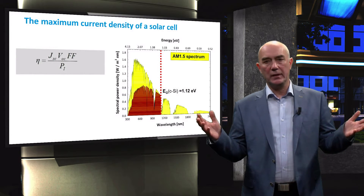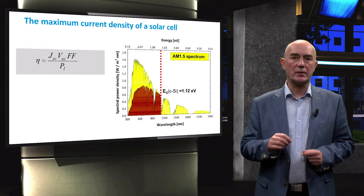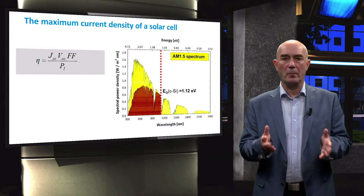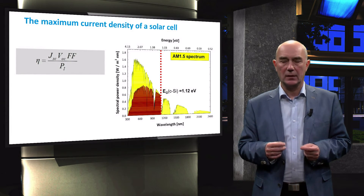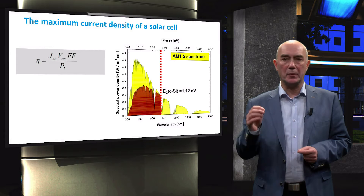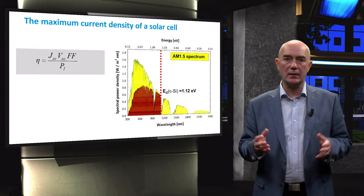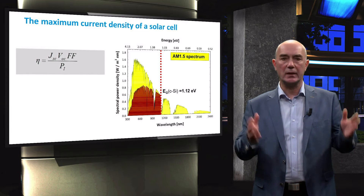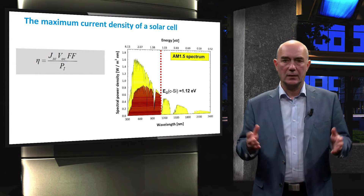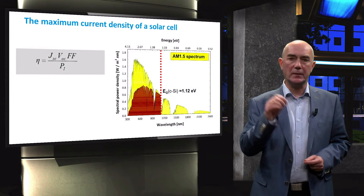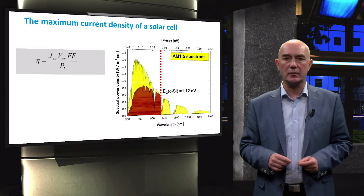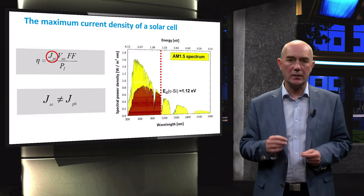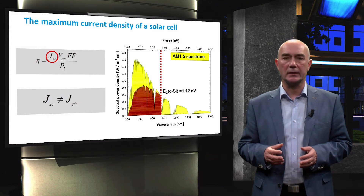We have already learned that the efficiency of a solar cell depends on its short-circuit current density, open-circuit voltage, and fill factor. We also calculated the potential photocurrent density by absorbing the AM1.5 spectrum for a given band gap. Nevertheless, because of the optical and electrical losses in solar cells, their short-circuit current is never equal to the potential photocurrent density.